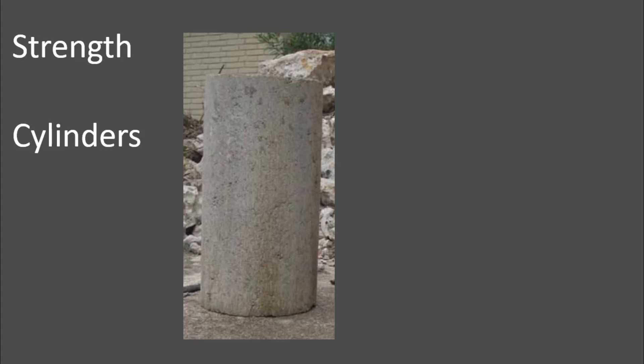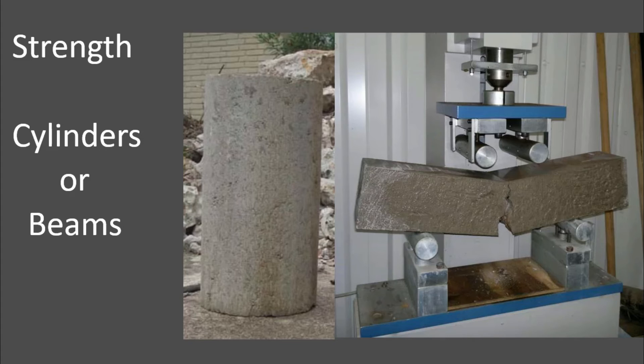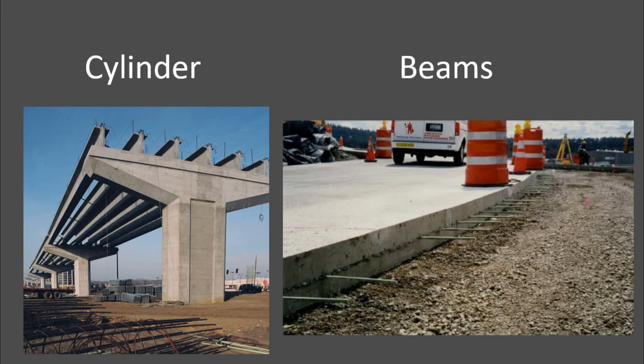And the last, but probably least, category is called strength. And strength, we usually use cylinders, or we use beams. I have the or underlined here. Because we don't usually need both of them. Usually, you only pick one. Now, there are people out there that say, which one should I pick? Some think that when it comes to structural concrete, it should be more cylinders. Some think when it comes to paving concrete, it should be more beams. I'll give you a secret. Both of these tests, both of them, are controlled by the tensile strength of concrete.